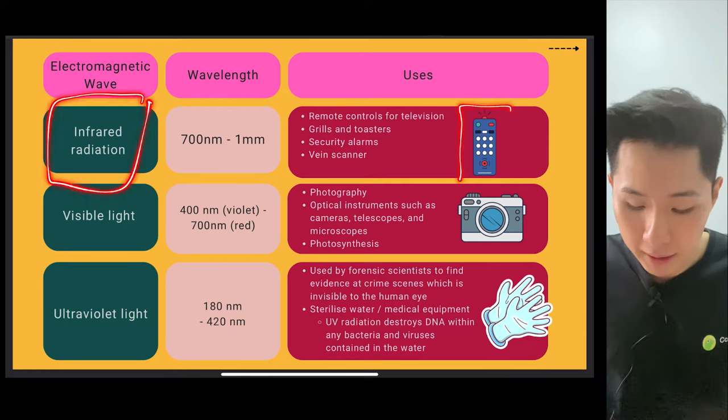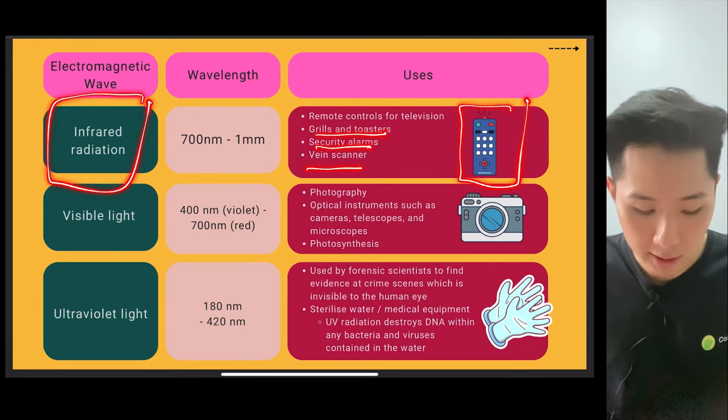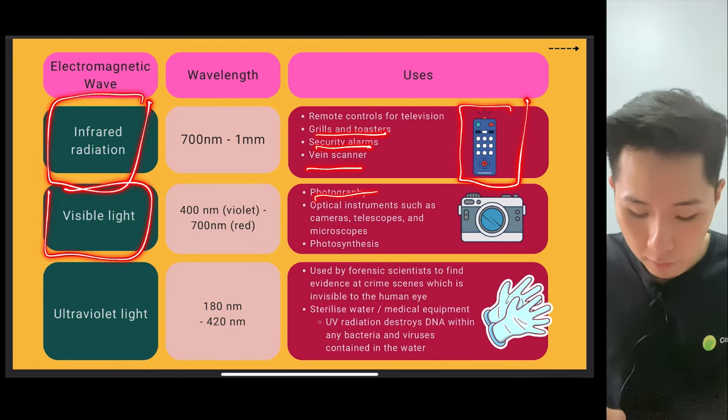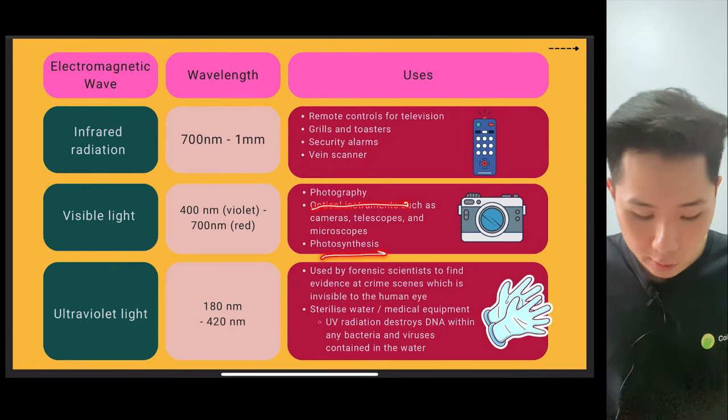Infrared radiation, something that we use in remote control, grill and toaster, vein scanner, security alarms. Visible light, photography, photosynthesis, optical instrument.